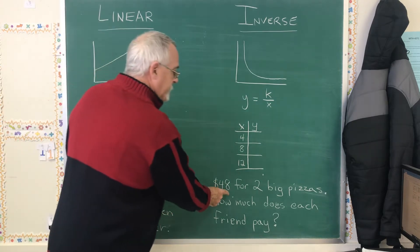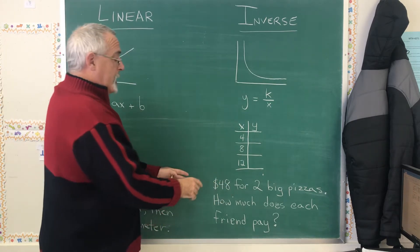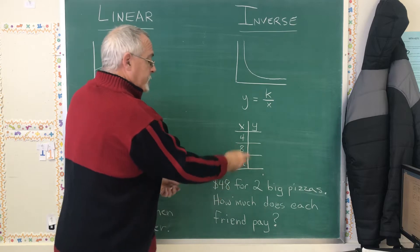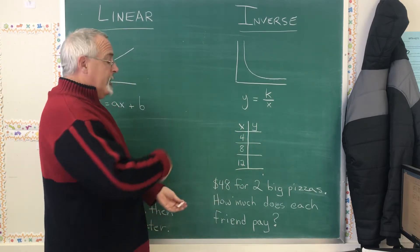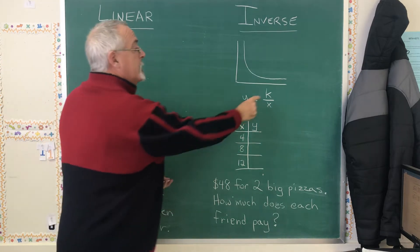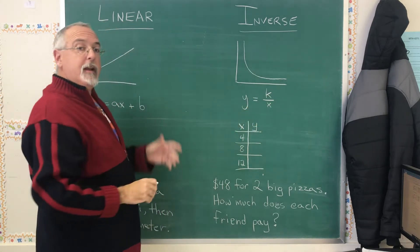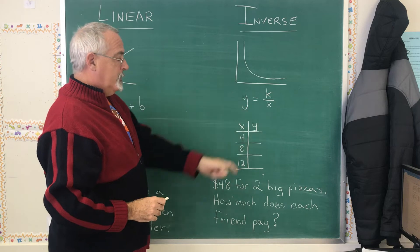Over here where we have $48 and we are dividing it by the number of people to see how much each person has to pay. That situation tells me that I'm doing a division and it hints at me that this is an inverse situation.